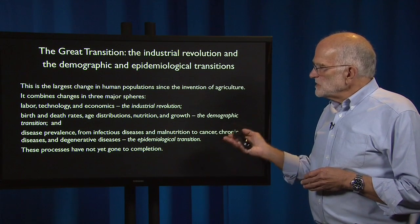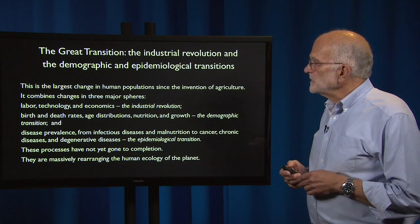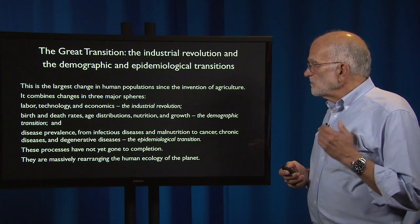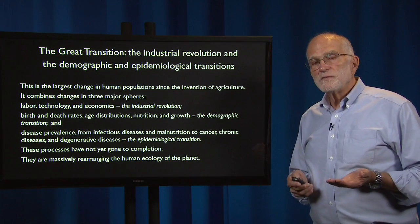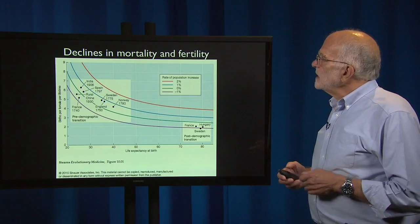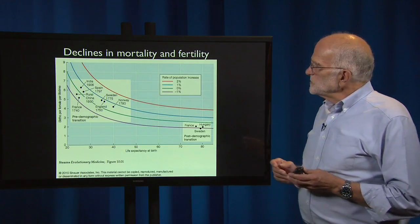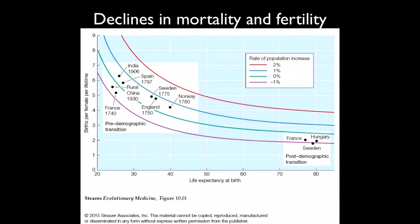These processes are continuing. They have not yet gone to completion; they are massively rearranging the human ecology of the planet. Here is a diagram that shows what's going on with mortality and fertility — births per female per lifetime on one axis and life expectancy at birth on the other.